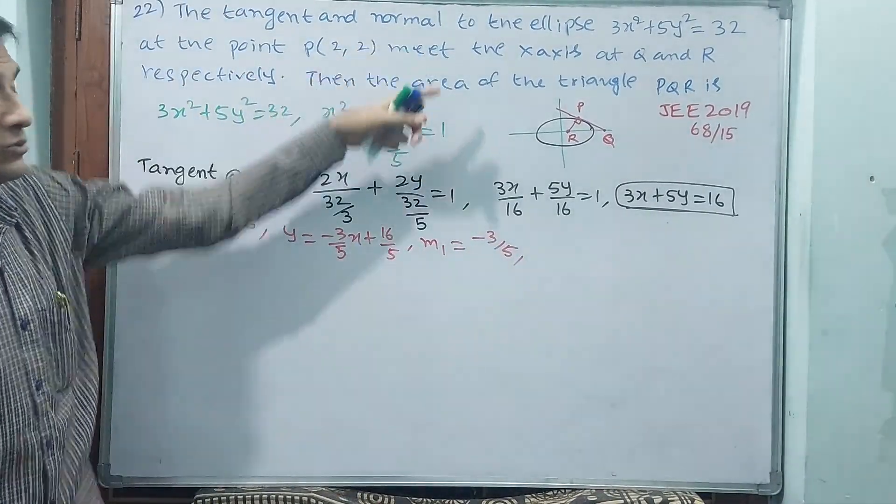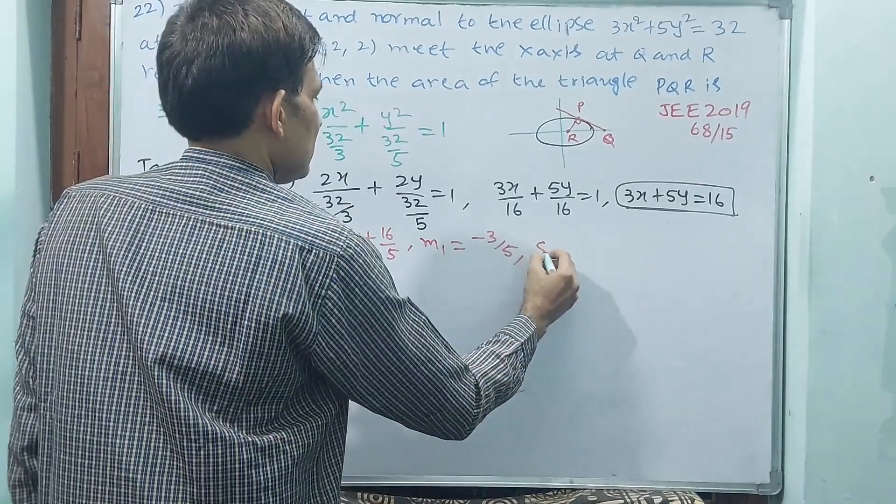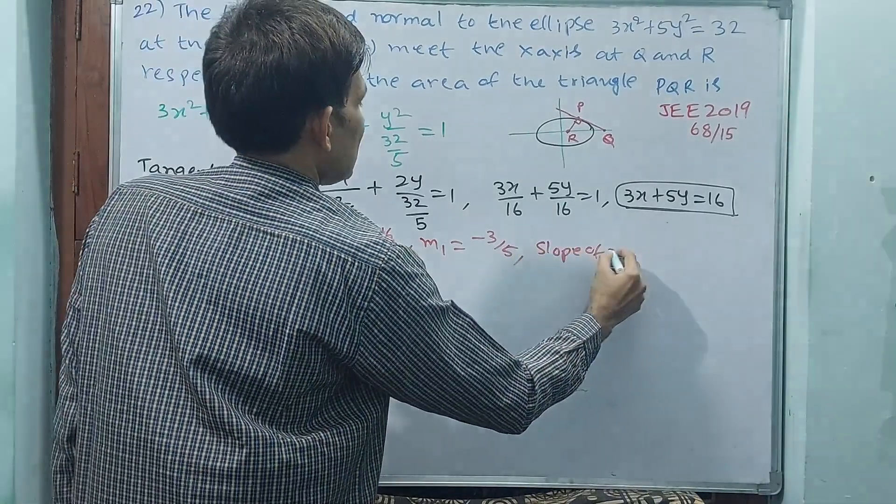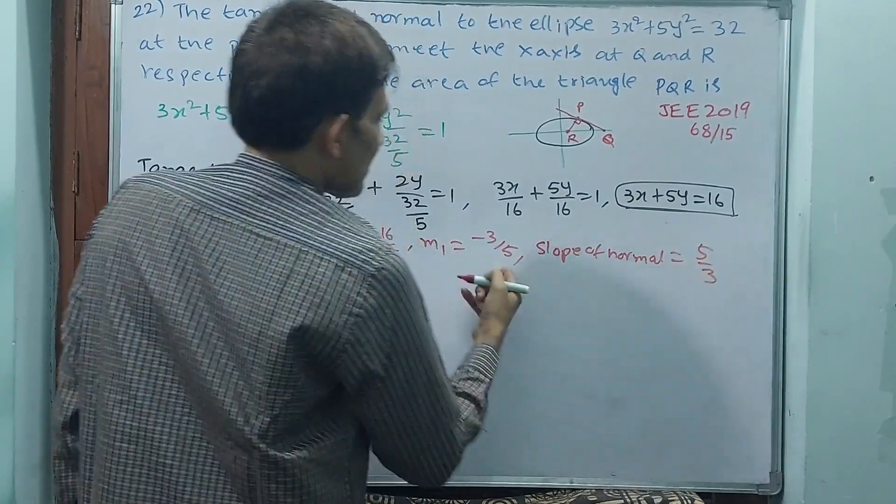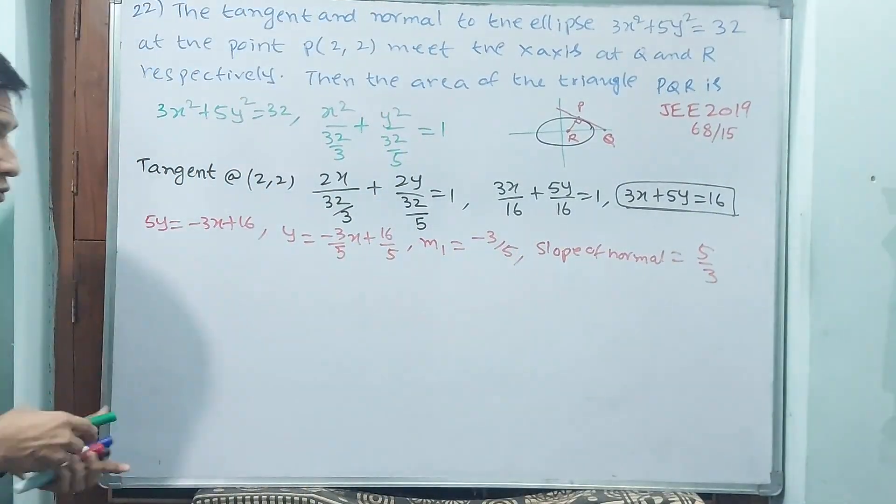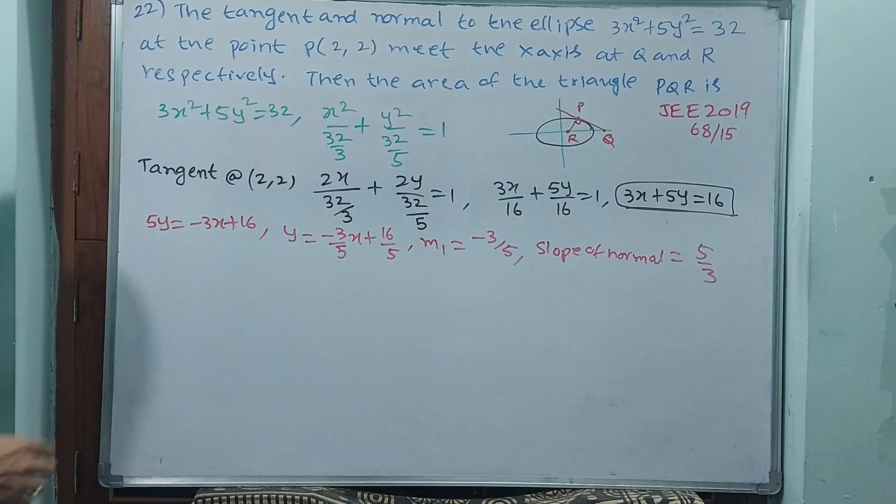Required normal also. Slope of normal, if slope of tangent is minus 3/5, slope of normal is 5/3.